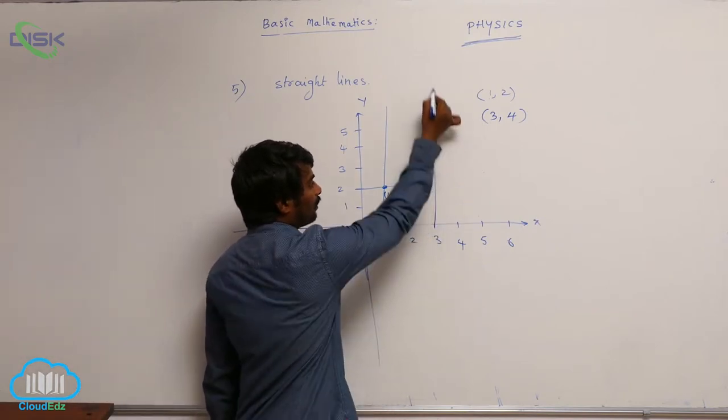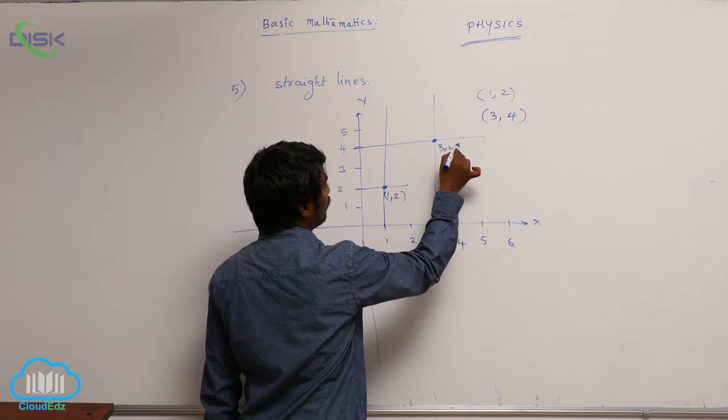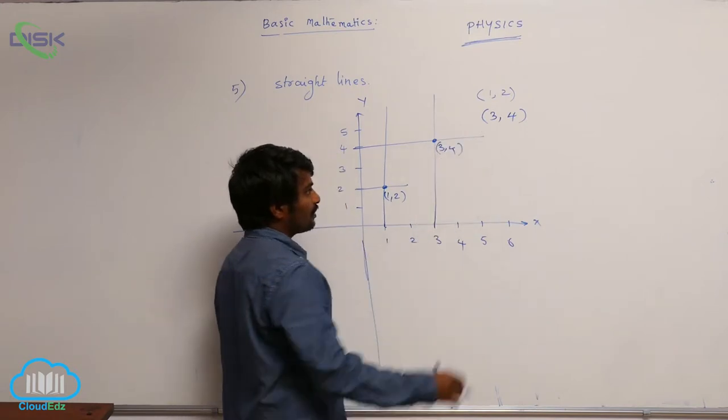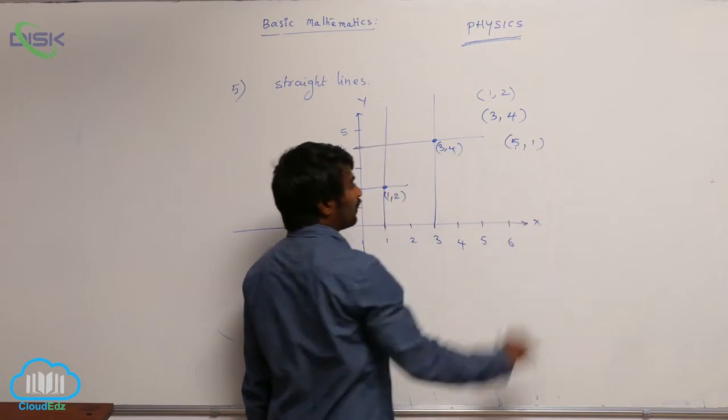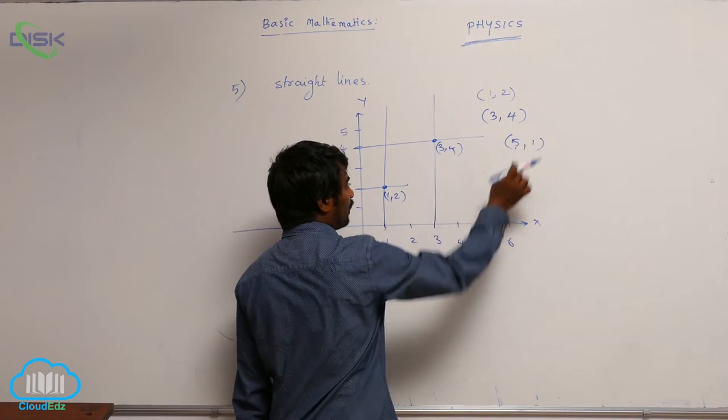So x-coordinate 3, y-coordinate is 4. So this is for (3, 4). And next (5, 1): x-value is 5, x-coordinate is 5, y-coordinate is 1.